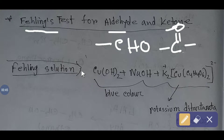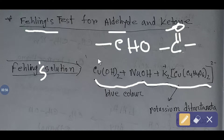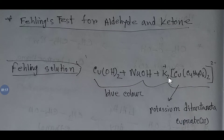What is Fehling's reagent or Fehling's solution? Fehling's solution is a blue solution. In this solution you will get copper hydroxide, sodium hydroxide, and potassium ditartrate cuprate. This is potassium ditartrate cuprate. Here, the two plus is the oxidation state of copper.